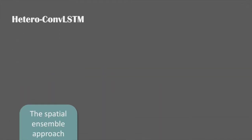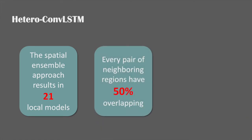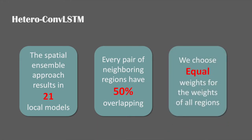As a result, it generates 21 different regions. Every pair of them have 50% grids overlapping with each other. The optimal weights could be learned, but we choose equal weights for simplicity.